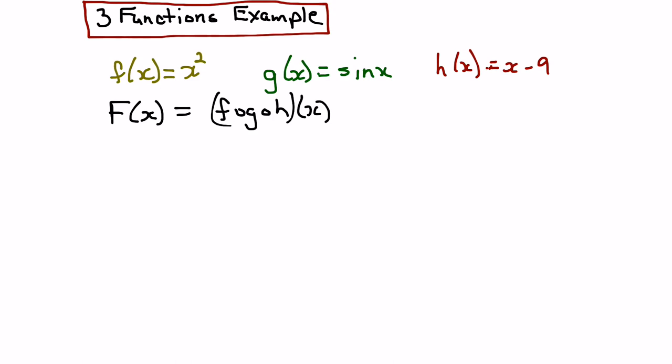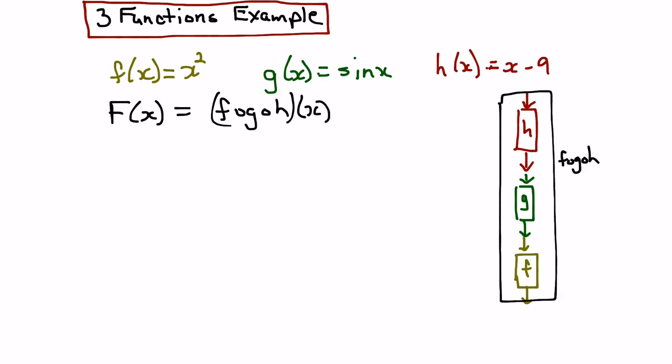So again, order is important. We'd start with h, and the output of h would go into g. And then that output would go into f. So diagrammatically, we have input into h. We get output that becomes the input for g. We get output that becomes the input for f. And we get the final result. So this represents the composed function f∘g∘h.